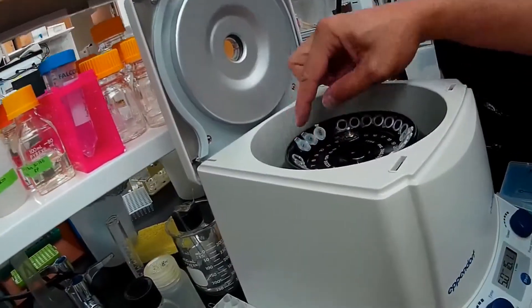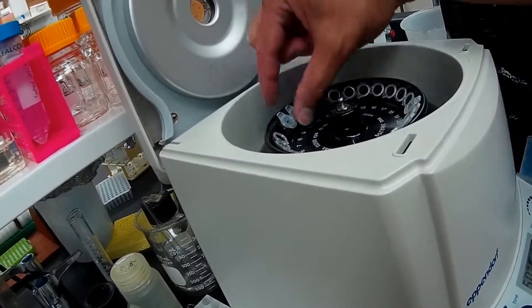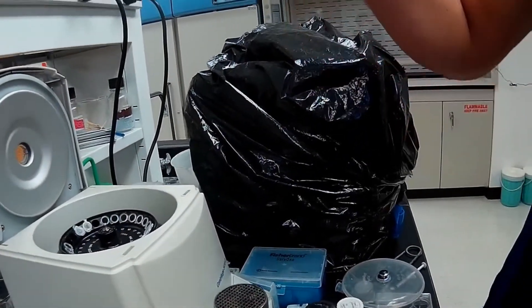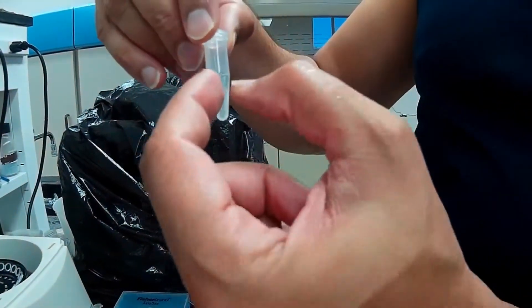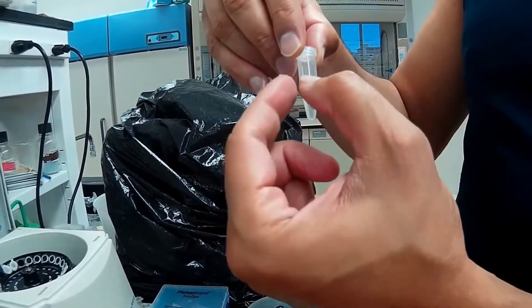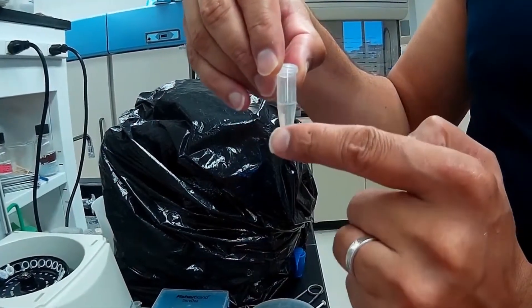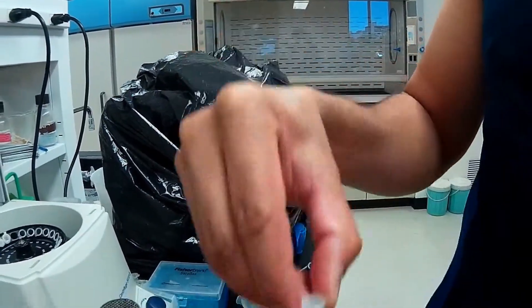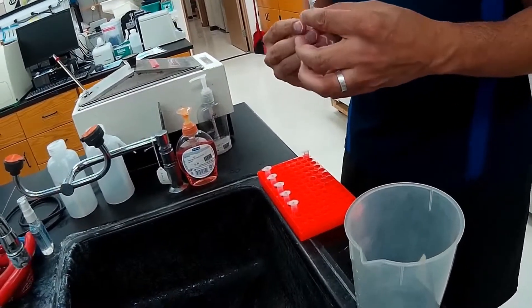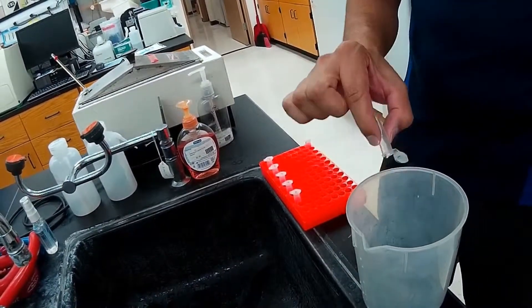The DNA will be pelleted on the outside of the rotor. So if you put the hinge side of the tube on the outside, that's where the pellet will be. It will be spread across that side of the tube and will not be a fine pellet. It will actually be a very dispersed pellet coating that wall of the tube. We discard the supernatant carefully into our bleach container.